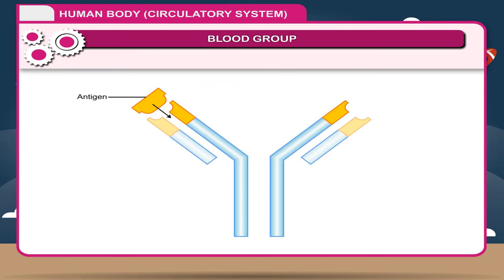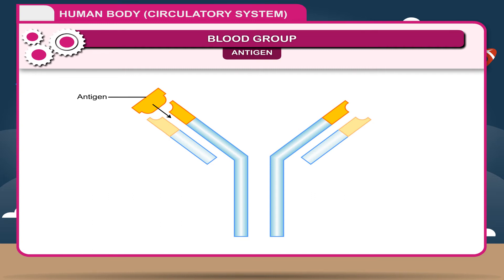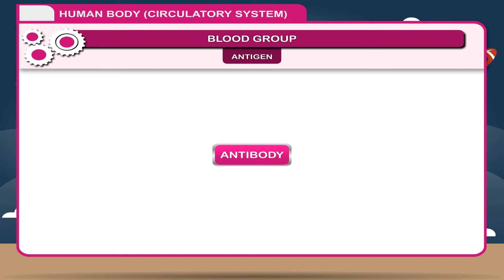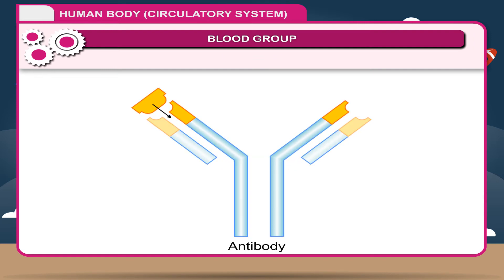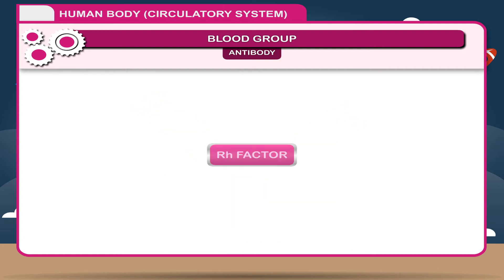Antigens are proteins that stimulate the production of an antibody when introduced into the body. The most common antigen producers are bacteria and viruses. Antibodies are proteins which are formed by the white blood cells in the body in response to antigens — foreign substances. Antibodies kill antigens.